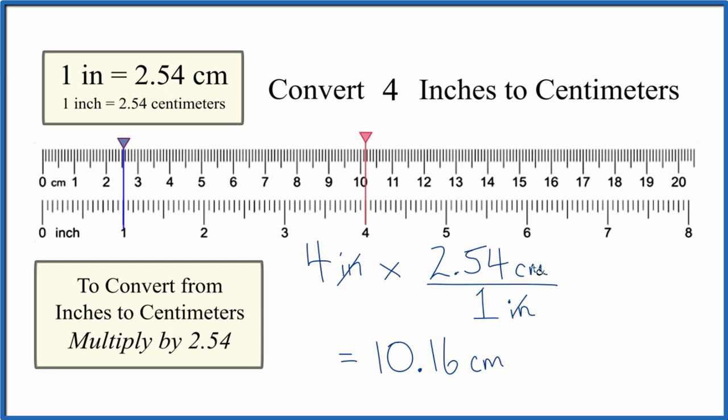Inches, they cancel out. We're left with centimeters. So four inches is equal to 10.16 centimeters. Pretty close to what we found before. The key, you need to remember one inch is 2.54 centimeters and that we multiply by 2.54 when we go from inches to centimeters.